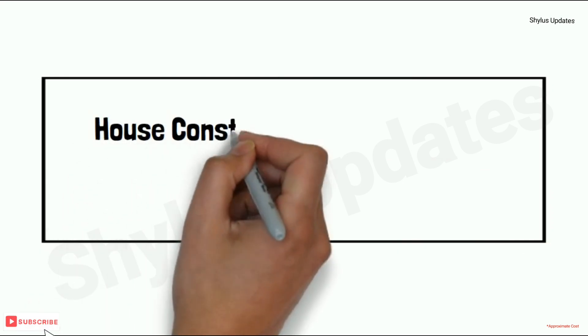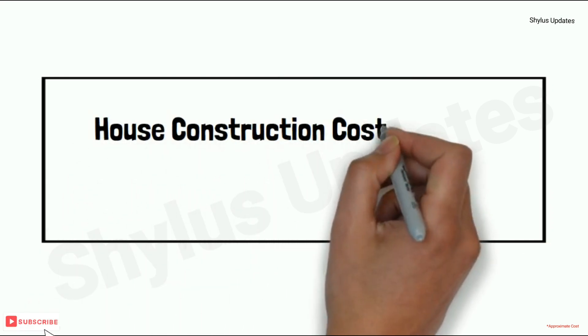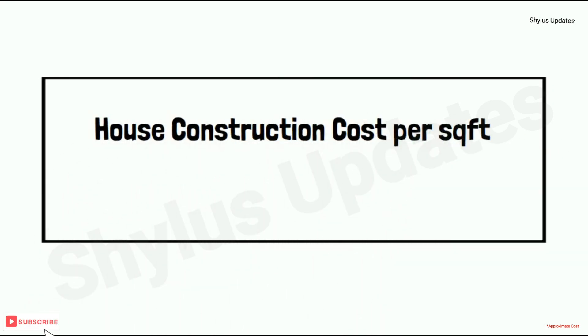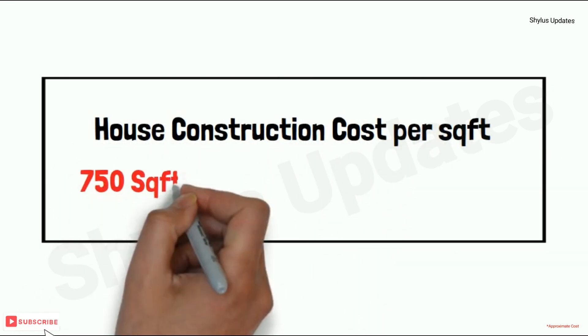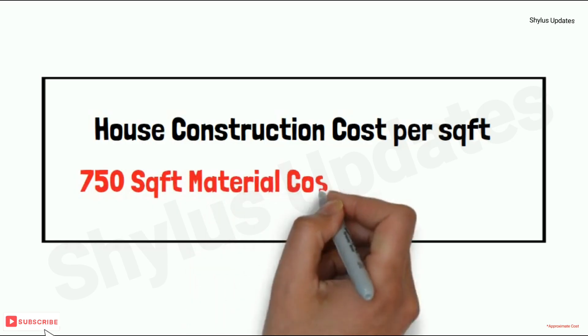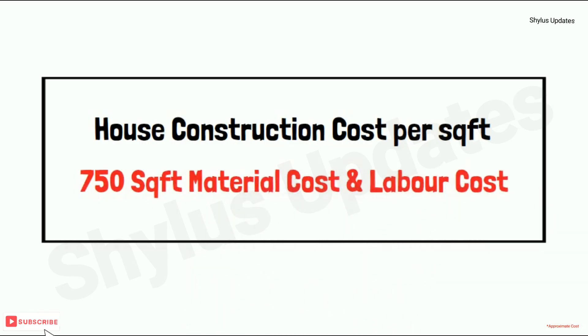House construction cost per square feet — 750 square feet material cost and labor cost.